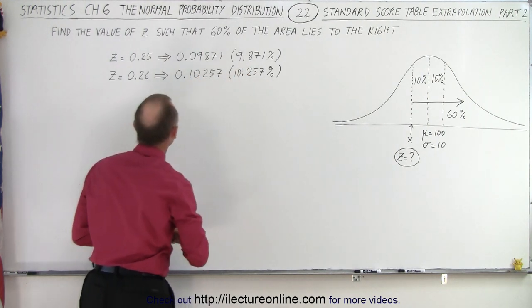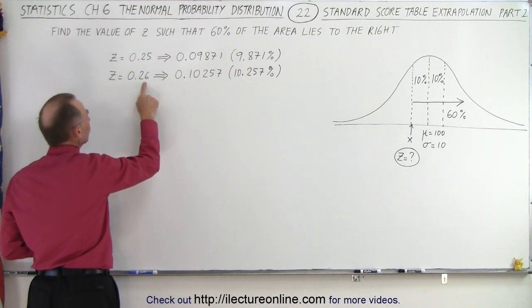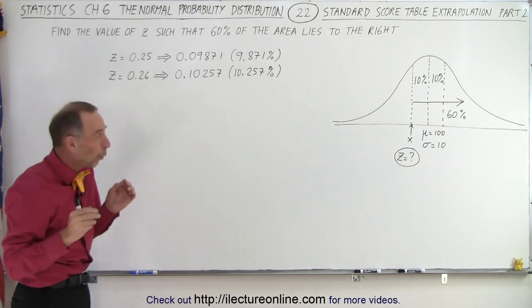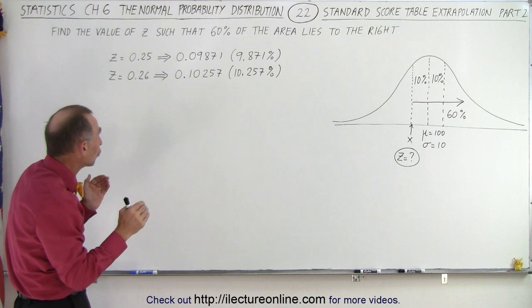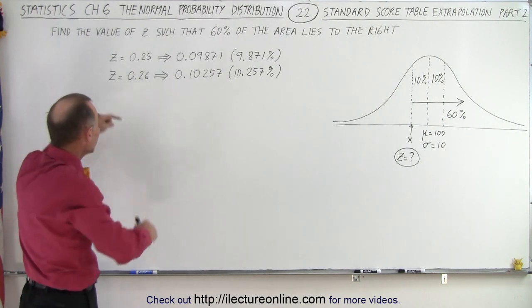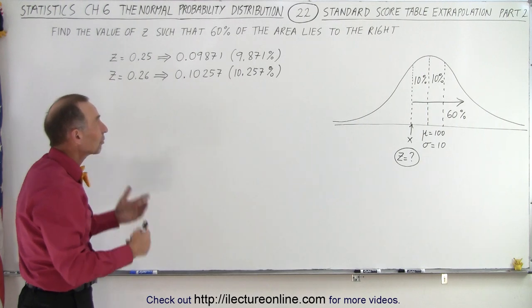And if we take z equals 0.26, it corresponds to 10.257%. So what is the z value that corresponds to 10%? Well, it's somewhere in between these two values, and we need to extrapolate it.